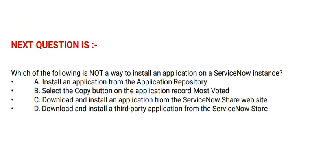Next question: Which of the following is not a way to install an application on a ServiceNow instance? Option A: Install an application from the application repository. Option B: Select the Copy button on the application record. Option C: Download and install an application from the ServiceNow instance. Option D: Download and install a third-party application from the ServiceNow instance.